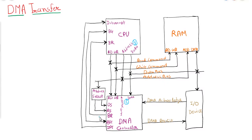After sending the data via the address bus and data bus, the CPU will enable the bus grant. As soon as the DMA controller receives the bus grant, it will know that it can now perform the operation. After enabling the bus grant, the CPU will be disconnected from the buses.